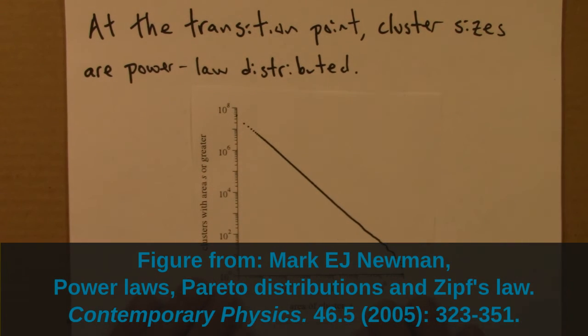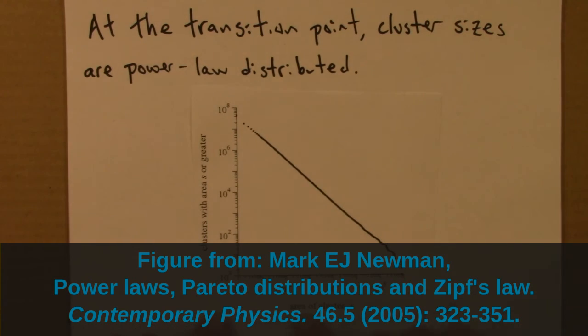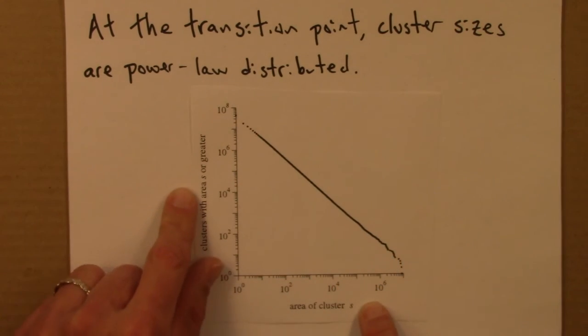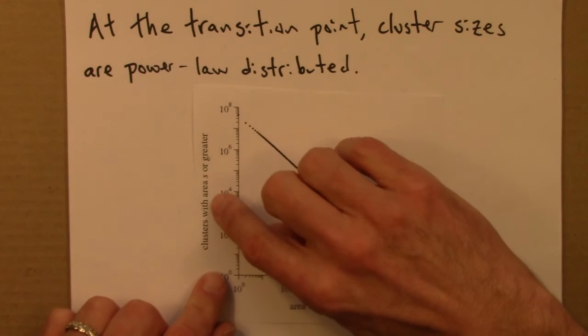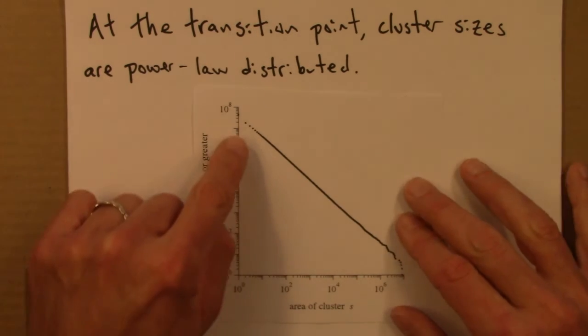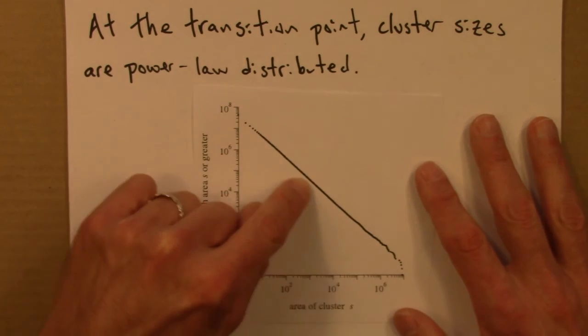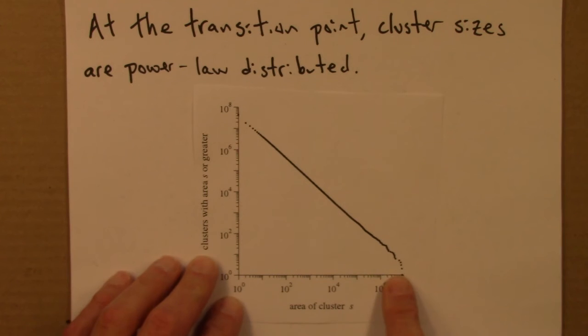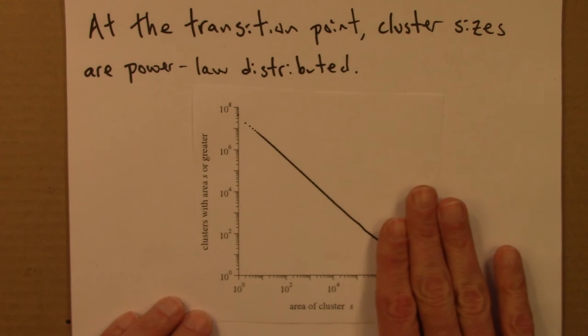In other words, it turns out that at the transition point, right where we have this change in behavior, cluster sizes are power law distributed. And here's a nice plot of that. Again, this is from the Newman review paper. And so, this is a cumulative distribution function, or a complementary cumulative distribution function on a log-log scale. And on this axis is the number of clusters with an area of s or greater. And then we see a really striking power law. So this is very linear behavior. There's some cutoff here,